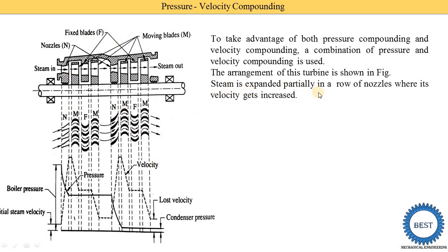Steam is expanded partially in a row of nozzles where its velocity gets increased. Where is the nozzle? Here you see this is the first nozzle. In the first nozzle, expansion is going on — when expansion is going on, pressure is reduced and velocity is increased. Here in the first nozzle, pressure is reduced and velocity is increased. Here is the second nozzle, and in the second nozzle the same thing happens: pressure is reduced and velocity is increased.